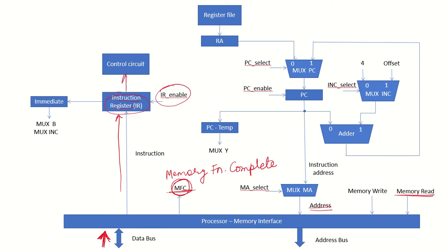From the instruction register, the opcode bits are read, the instruction is decoded, and the control circuit generates appropriate control signals depending on the kind of instruction. Certain bits of the instruction are also read for the immediate value. The bits specifying the immediate value, in case the addressing mode is immediate, are sent to MUXB in the data path or to the MUX of the program counter when reading the offset value.